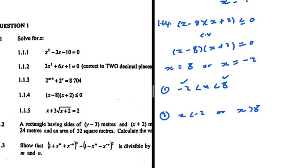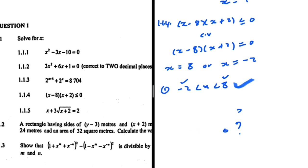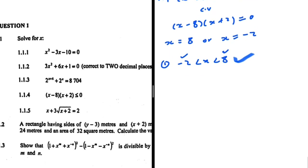Let's take x equals 0 — a number between minus 2 and 8 — to make life simple. We get (0 minus 8)(0 plus 2) equals minus 16, and minus 16 less than or equal to 0 is true. So this first option is our solution, and we rule out the second option.